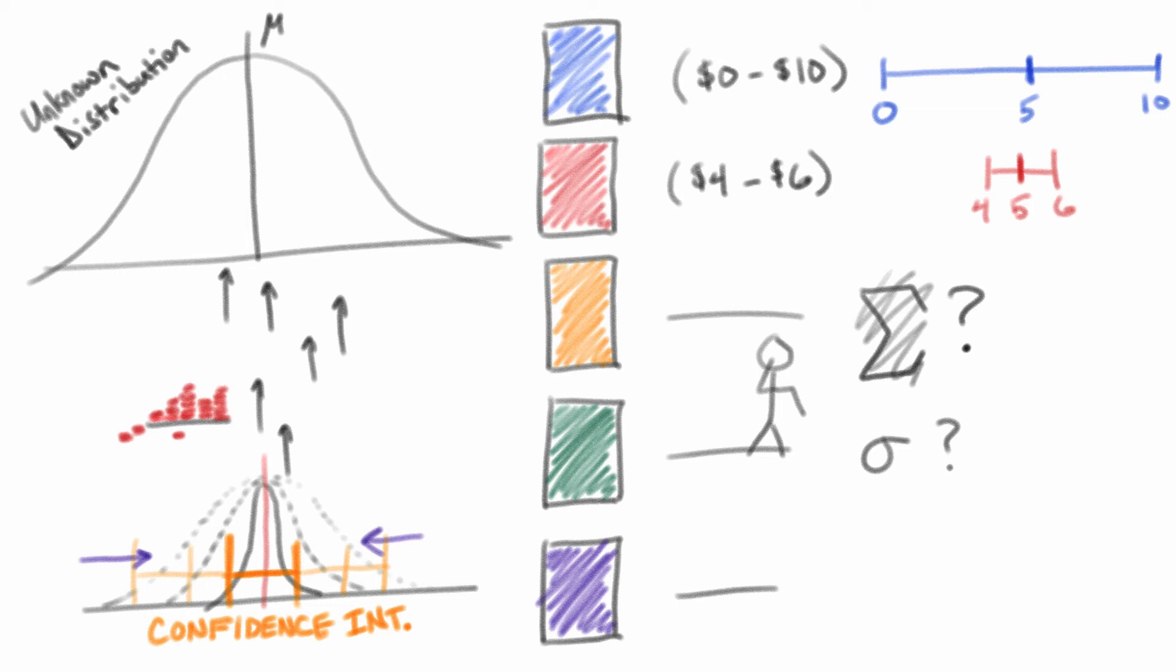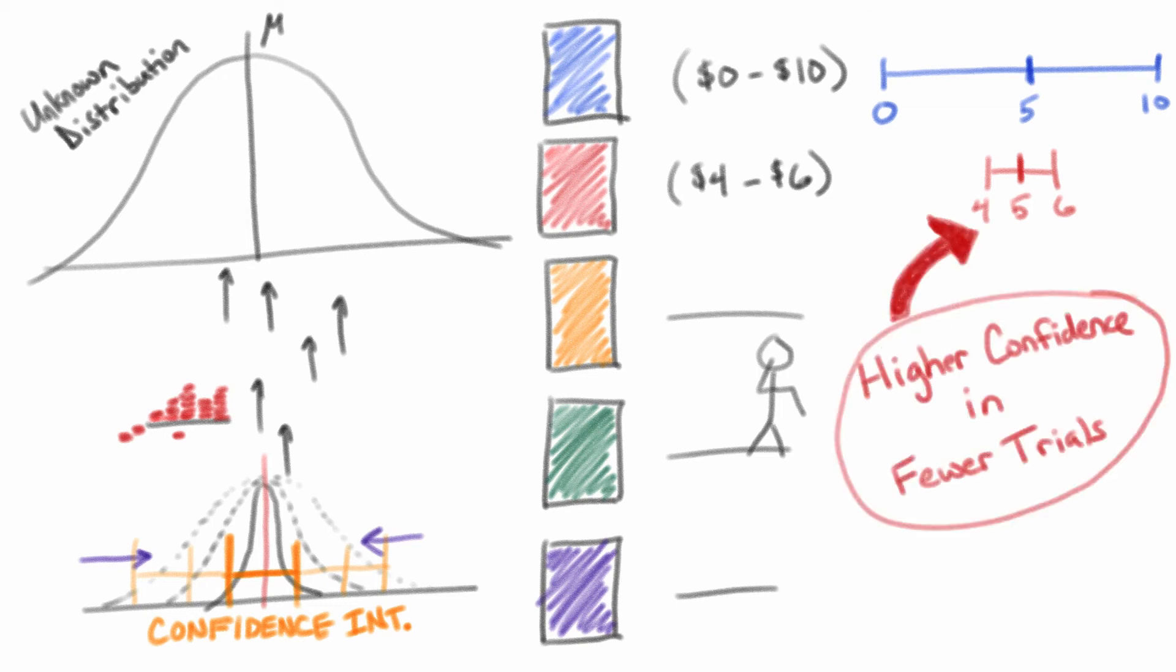Therefore, due to the lower variance of the red machine's rewards, we should be able to achieve confidence in our $5 expectation in far fewer trials than it would take for us to determine the same in the blue machine. That means that after a certain point, tokens spent on exploration for the red machine would be less valuable.